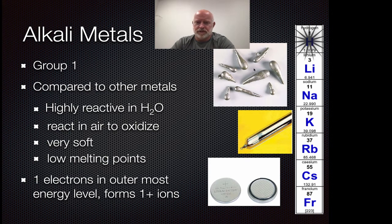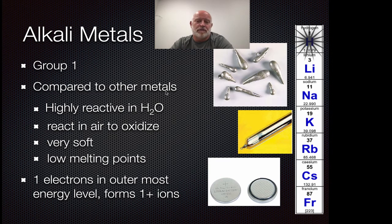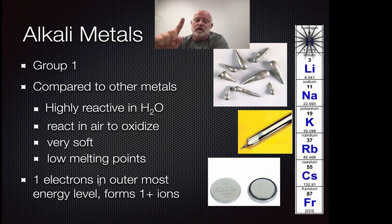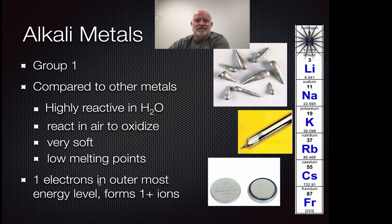Looking at the metals, they're all very silvery in nature. So what's unique about alkaline metals? We should go back to their electron configuration — they have only one electron in that outer energy level, which means they're going to form a one-plus ion when they form charges. They're going to get rid of that one valence electron that they have, which is very common for them. Because they ionize the same way, they also have very similar properties to each other.